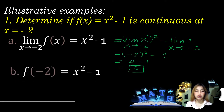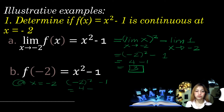Next, f(-2) = x² - 1. Let's find the value of the given function at x = -2. So (-2)² - 1 = 4 - 1 = 3. Since 3 is a defined value, it satisfies the second condition. As you can observe, the two values are equal.